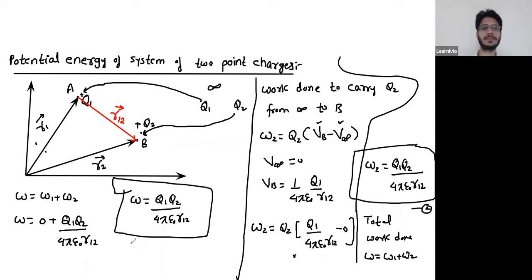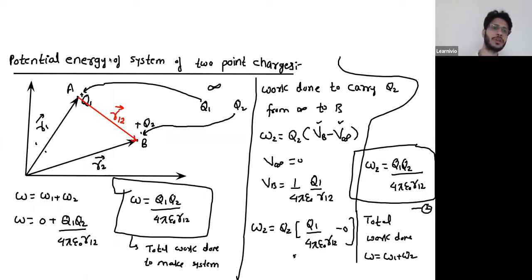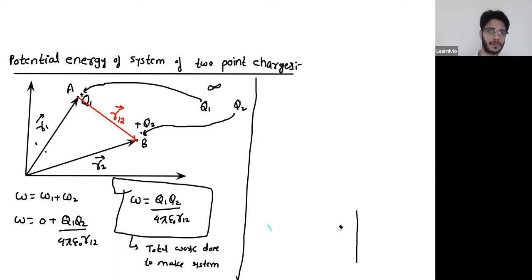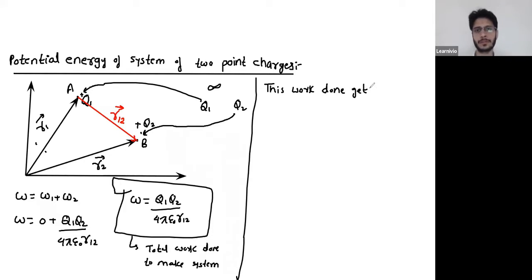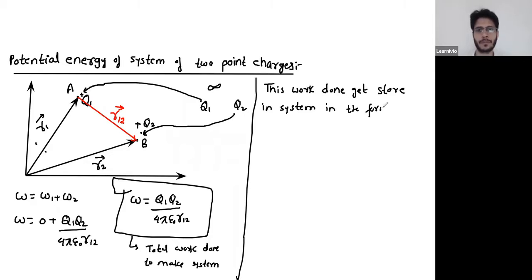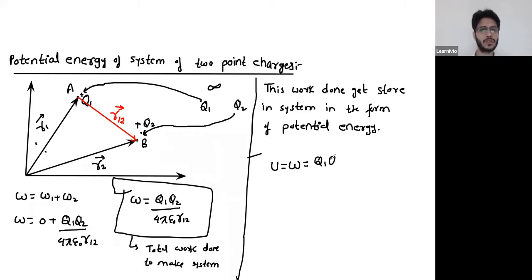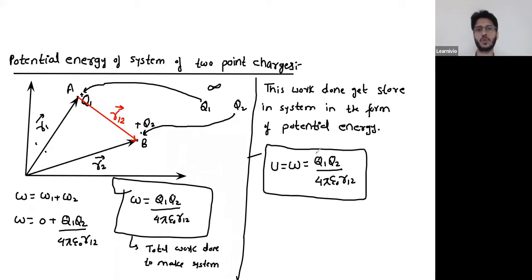This is the total work done to make the system, and this total work done gets stored in the system in the form of potential energy. So the potential energy of a system of two point charges is U = Q1·Q2 / (4πε₀·R).